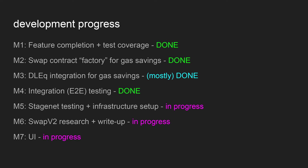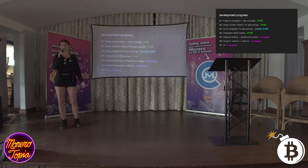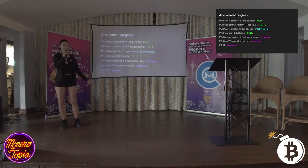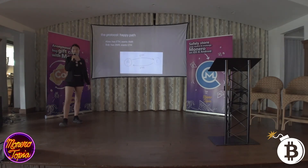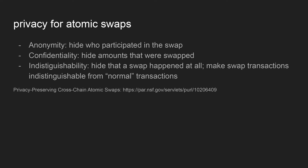The seventh milestone is a UI — we've already seen that, and we're essentially going to make it really nice and add MetaMask integration. Now, privacy for atomic swaps: since we all like privacy, you might be wondering how your privacy is preserved in an atomic swap. This is something I'm pretty interested in researching.